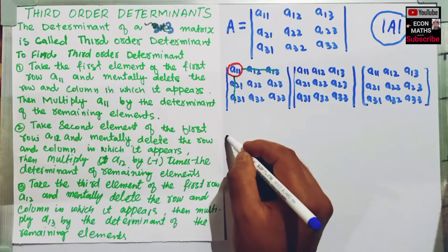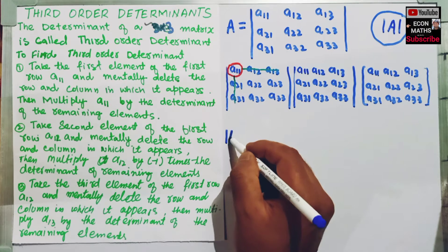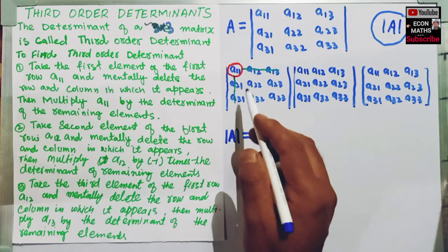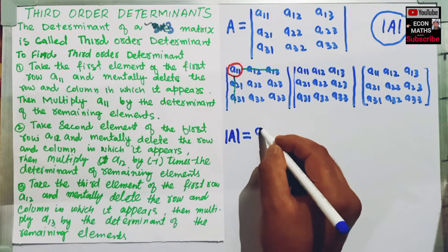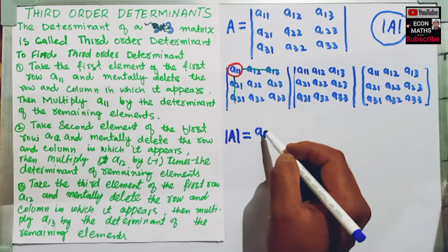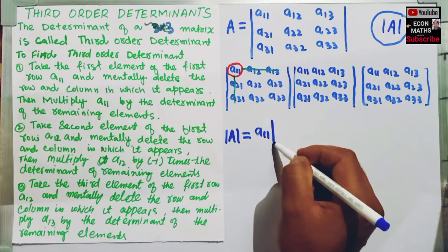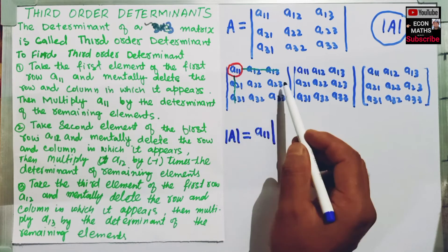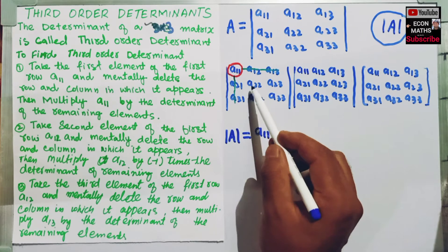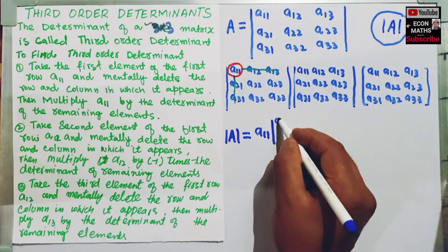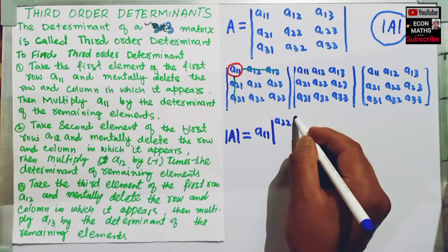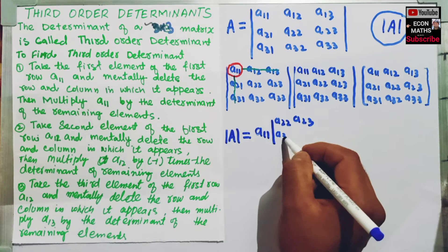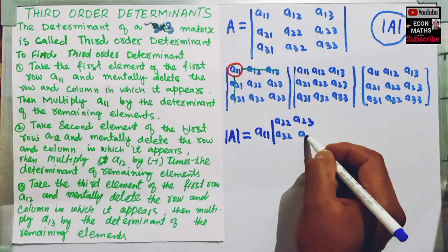Our determinant will look like this. This is the symbol for determinant. It equals the first element A11 multiplied by the determinant of the remaining elements: A22, A23, A32, and A33.